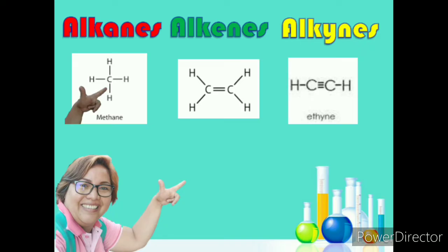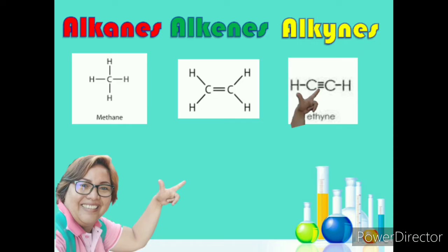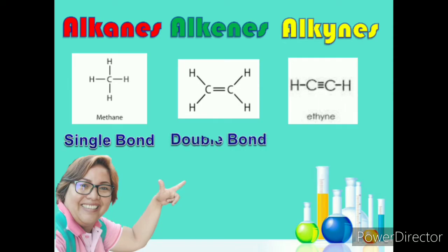This line represents the bond between the atoms. In the alkanes, you have seen only one bond from carbon to hydrogen. On the alkenes, there are two bonds. And in the alkynes, there are three bonds. So that is their main difference: alkanes have a single bond, alkenes have a double bond, and alkynes have a triple bond.